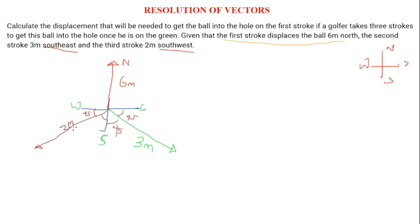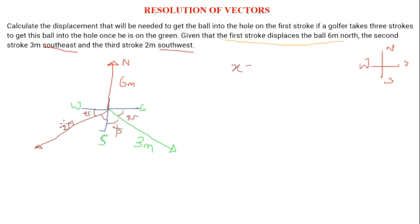To find the total displacement, we will need to resolve all of these vectors into their x components and y components. Resolution of a vector means splitting vectors into their respective components. I will split the 3-meter displacement, the 6-meter displacement, and the 2-meter displacement.